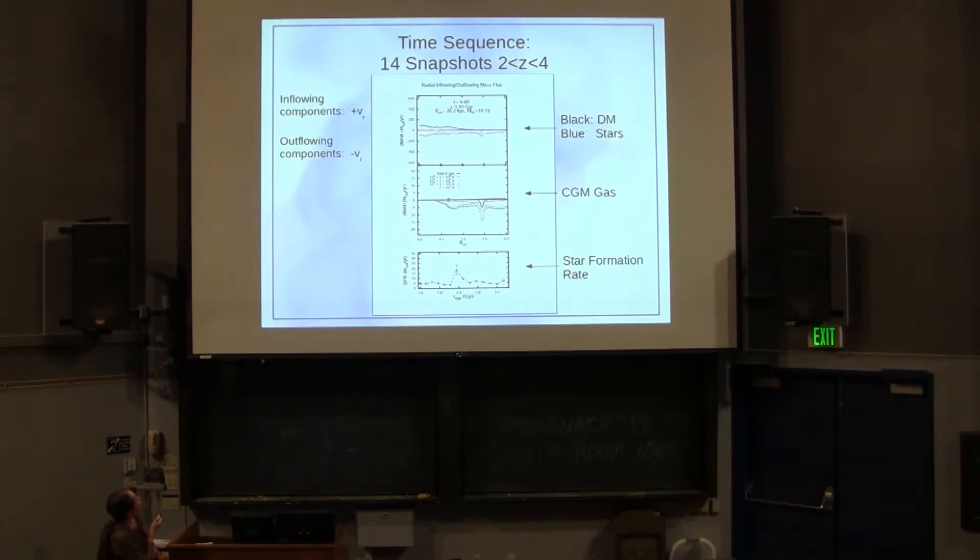On the top panel, the black line represents dark matter, the blue line represents stars. In the middle panel, there's the gas in the CGM separated out into temperature bins. Red is the hottest bin at above 10 to the 6, then the orangish yellow line is 10 to the 5 to 10 to the 6, green is 10 to the 4 to 10 to the 5, and everything below 10 to the 4 is in blue. At the bottom, we have star formation rate calculated in the cylindrical disk region. The red dot shows you where we are at each snapshot.